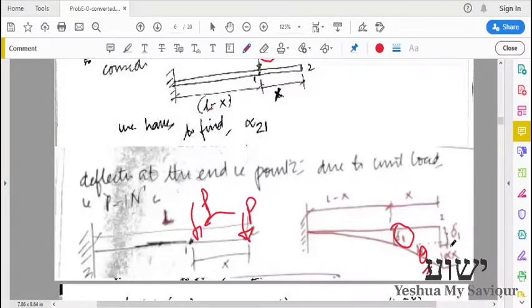So the additional deflection of point 2 will be theta times x. So this will be the net deflection, that is, the net deflection of point 2 is equal to delta 1 plus theta times x. That is what we have to find out.